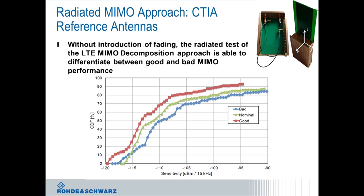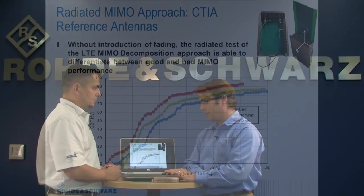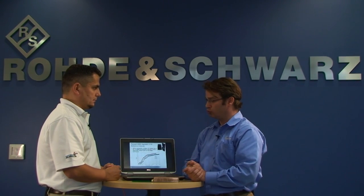The good antenna is towards the left side of the graph, the nominal pretty much in the middle, and the bad antenna mostly towards the right. That is basically telling you that the good antenna is performing best and the bad antenna is performing the worst — so what you would probably expect. And this is what our approach should be able to uncover.